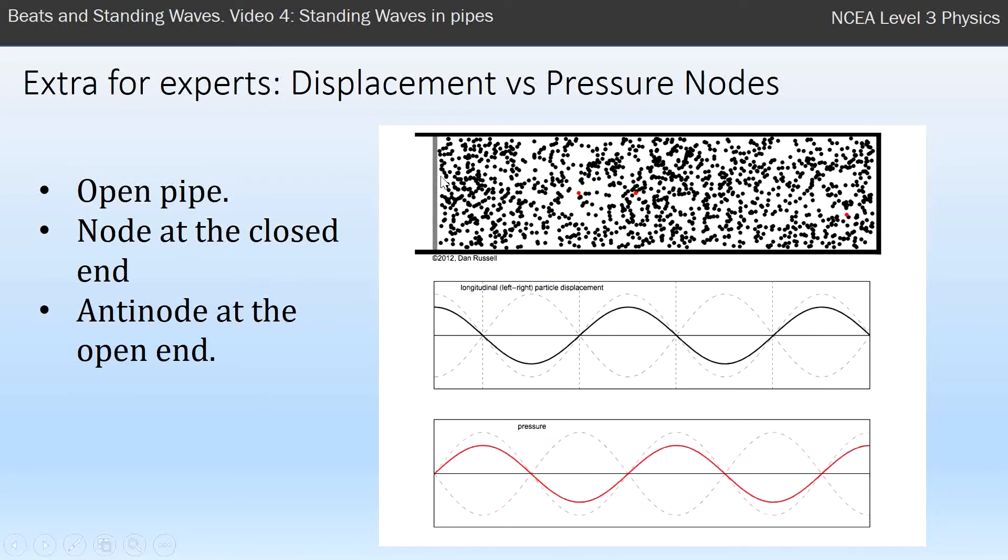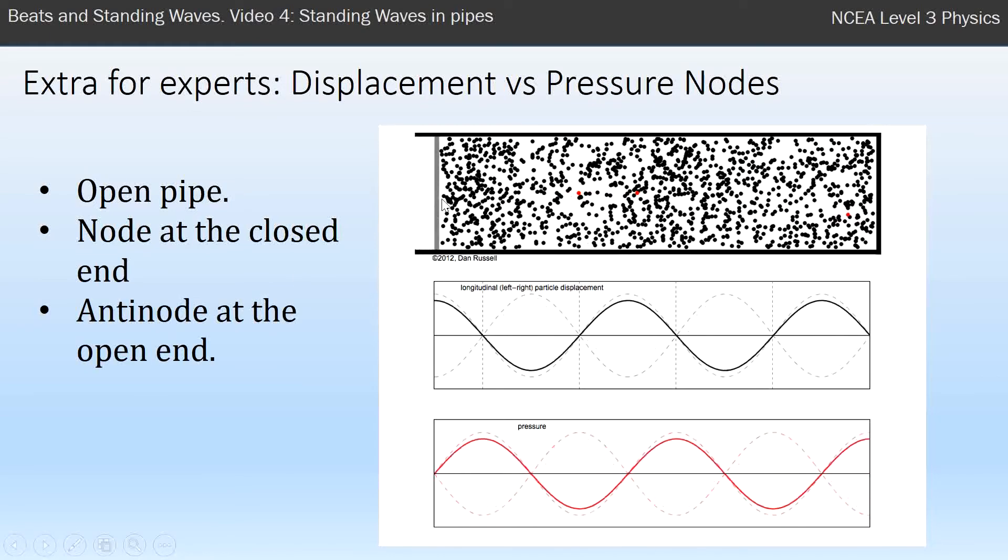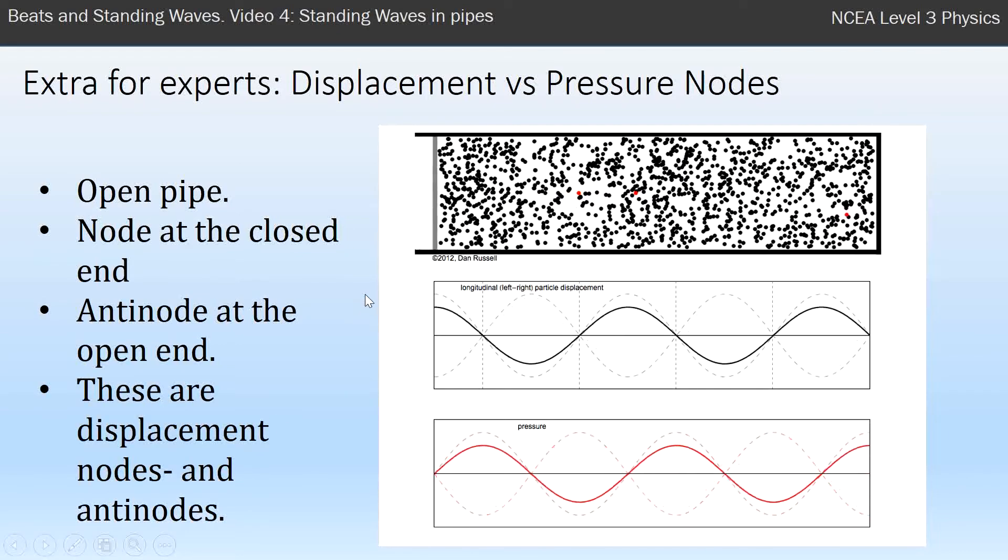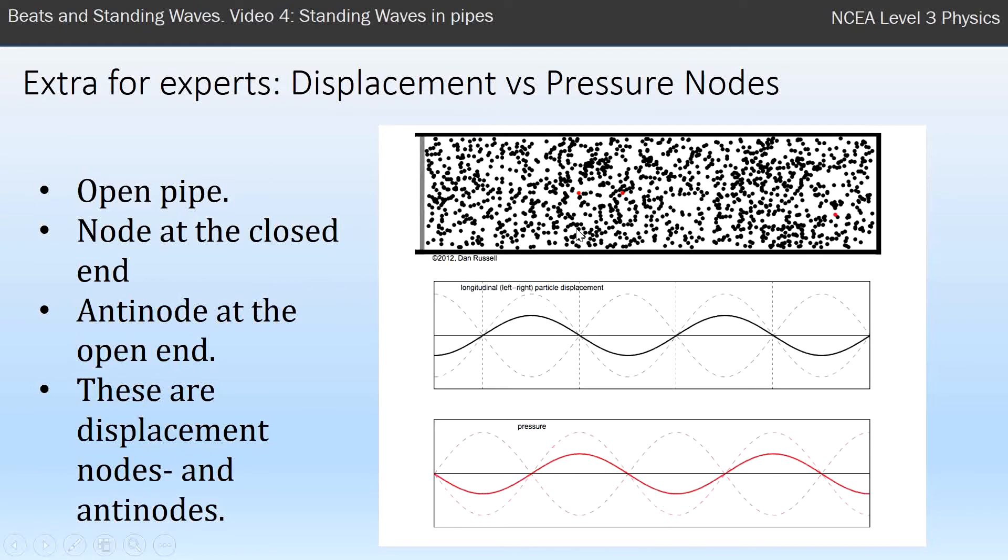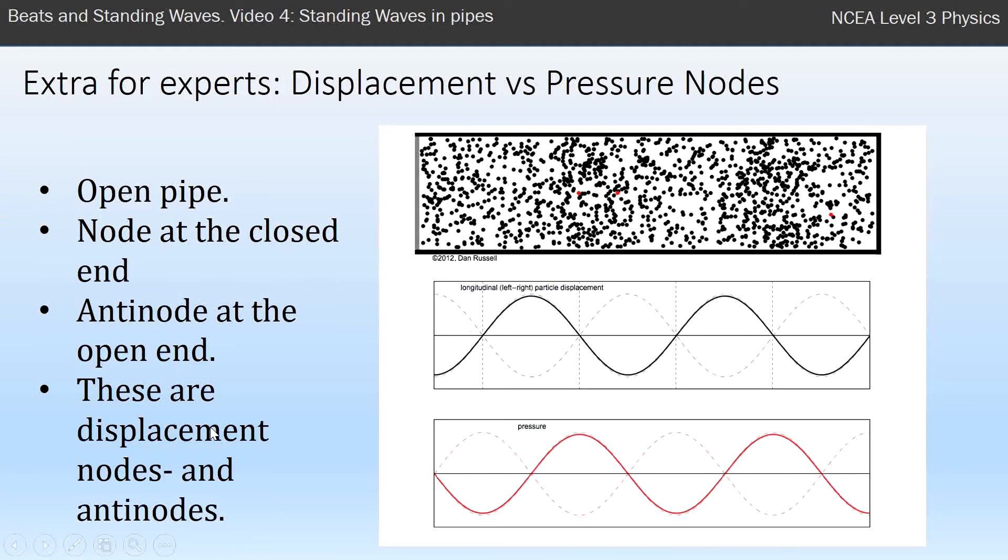And an anti-node at this end—the particles can move a lot at the left end. What I'm talking about, nodes and anti-nodes, they are displacement nodes. They're talking about how far the particles are being displaced.